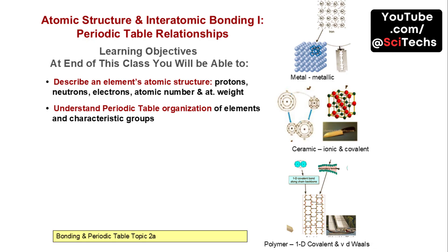By the end of this class, you will be able to describe an element's atomic structure, including protons, neutrons, electrons, atomic number, and atomic weight. Additionally, you will understand the organization of elements in the periodic table and their characteristic groups.